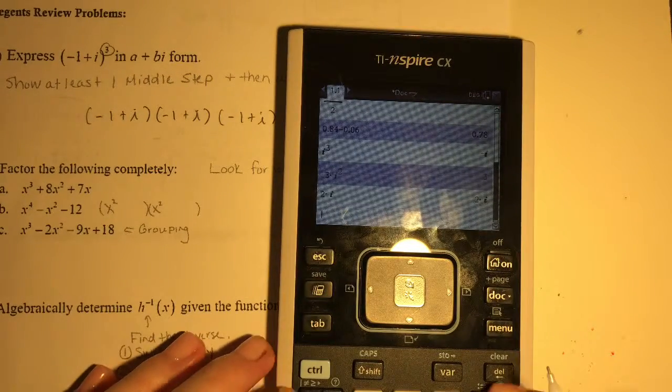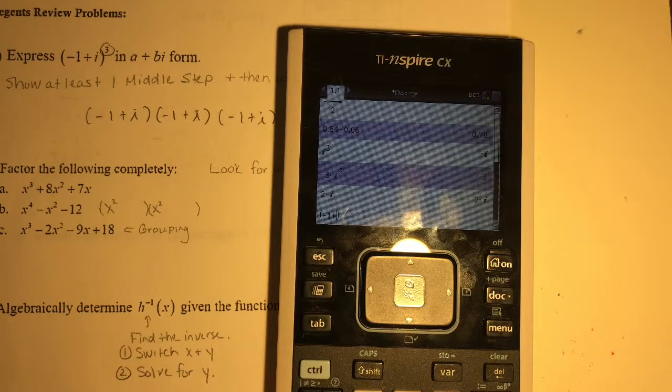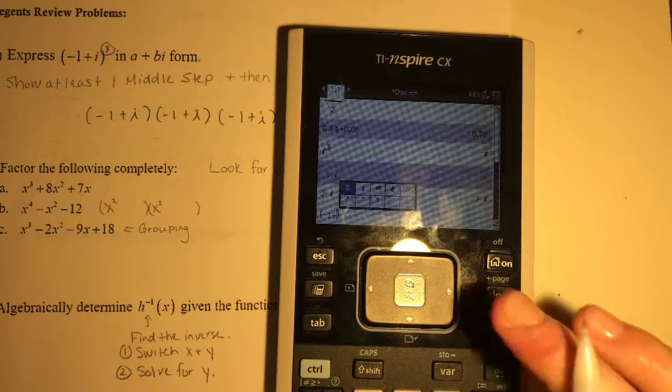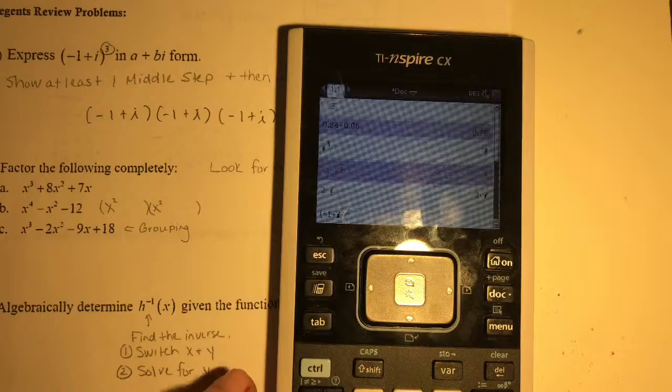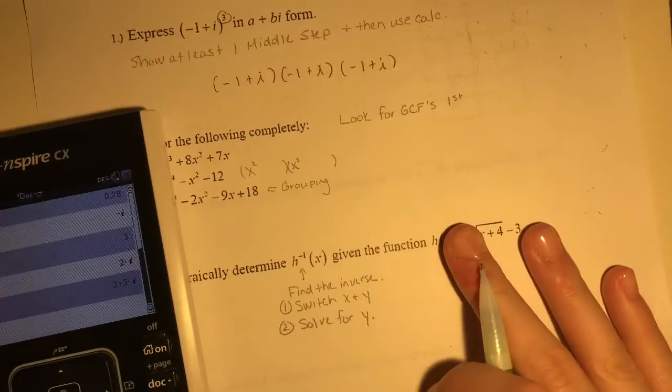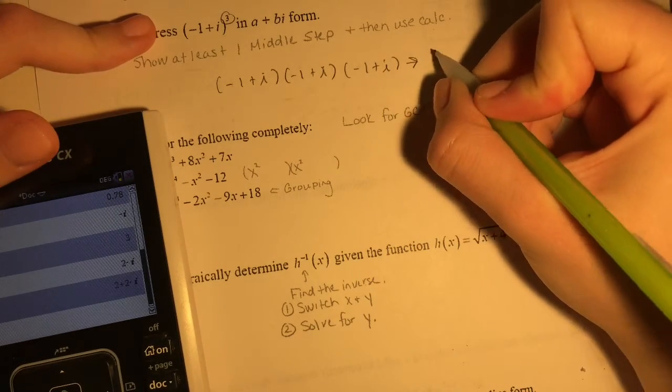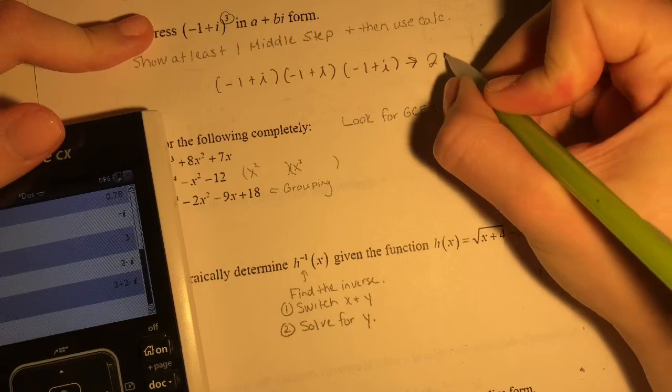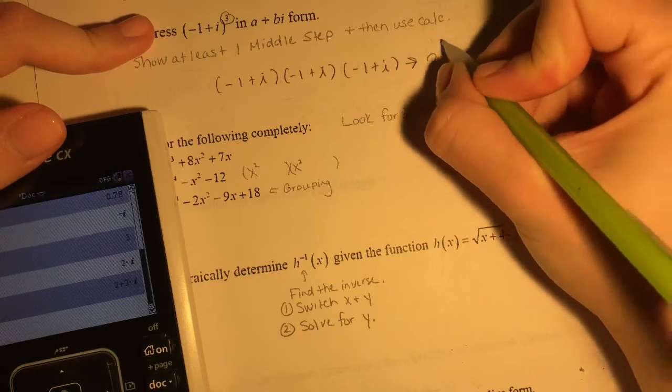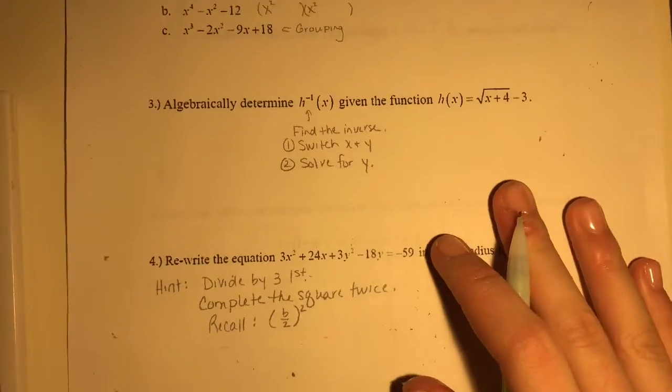So if we do some parentheses right here, negative one plus i, let's just put this to the third power. We are given 2+2i. Our calculator is so smart it already gives us the a+bi form. So I'm just gonna say that this equals 2+2i. And that's our answer.